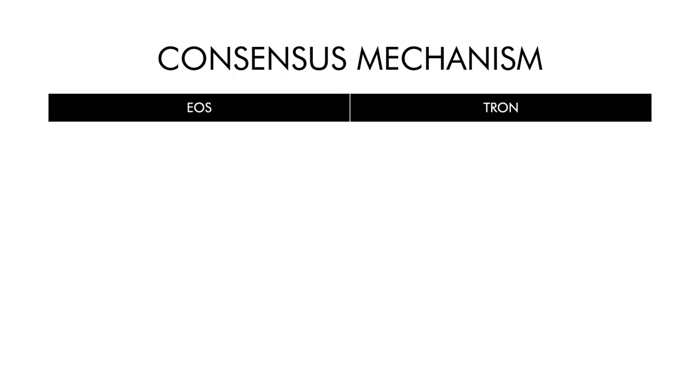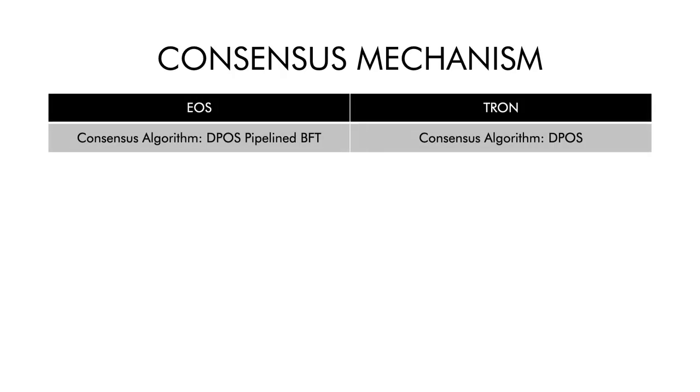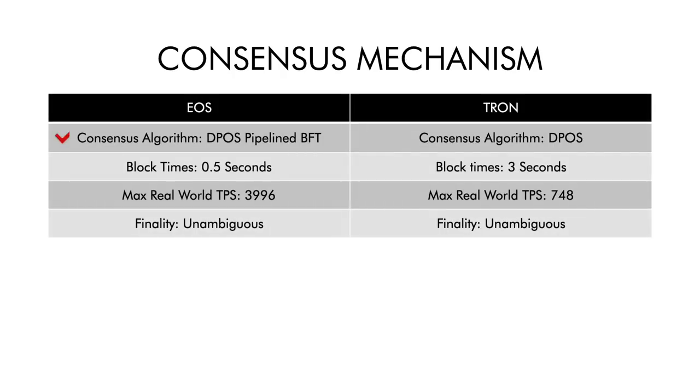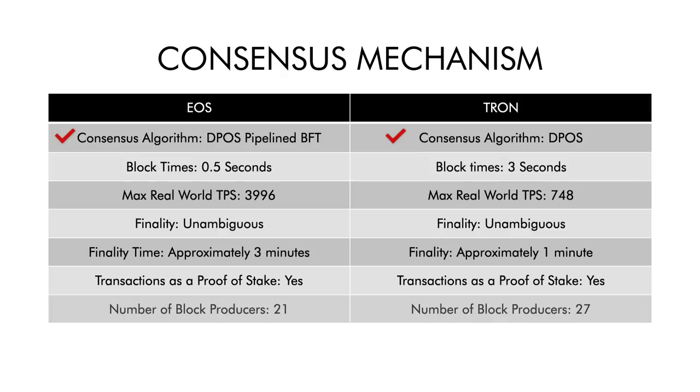Our first segment is consensus mechanisms. EOS and TRON have a similar consensus mechanism known as DPoS, or Delegated Proof of Stake. EOS has half-second block times, TRON has three-second block times. TRON has 27 block producers, EOS has 21. The key takeaway here is that developers and projects will prefer to use EOS for its half-second block times, which produce much more responsive applications.